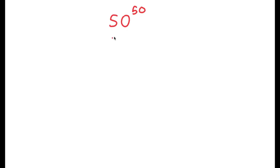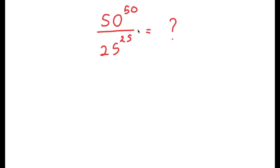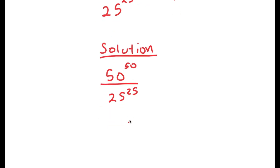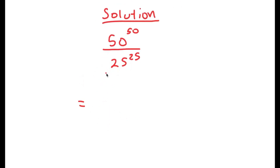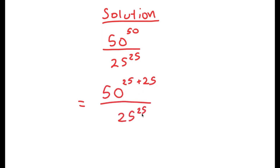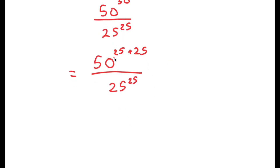In this video, I'm going to teach you how to solve 50 to the power of 50 over 25 to the power of 25. To start, I'm going to rewrite this as 50 to the power of 25 plus 25 over 25 to the power of 25. The reason I rewrote it this way is because I can now use the exponential property that states a to the power of m plus n equals a to the power of m times a to the power of n.